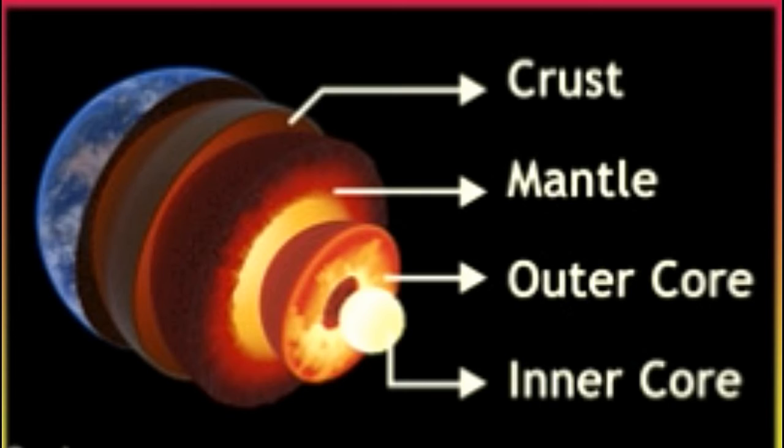The outer core is liquid and made up of iron and nickel. The recorded density is very high, but less than pure molten iron. Hence, scientists are of the opinion that sulfur and oxygen may be present in the outer core.